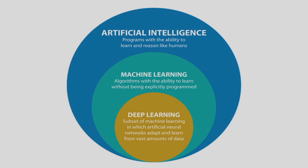The lecture is the introduction to machine learning. Here I am showing that one is artificial intelligence, one is machine learning, and one is deep learning. The definition of artificial intelligence is: programs with the ability to learn and reason like humans. Machine learning is a subset of artificial intelligence — the algorithms with the ability to learn without being explicitly programmed. Deep learning is a subset of machine learning and is the advanced version of artificial neural networks.